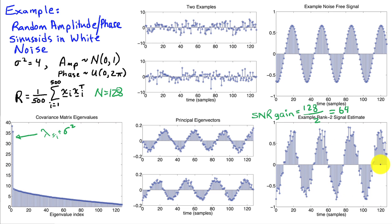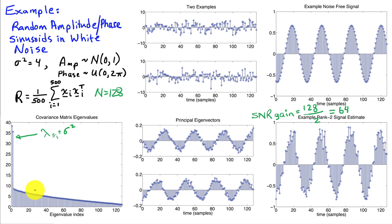One practical challenge with PCA is that in many problems there is not such a clear separation between eigenvalues associated with the signal and those associated with noise, and the noise often isn't exactly white. Choosing the appropriate value of p is therefore more difficult, requiring significant judgment about when the larger eigenvalues cease to be significant and fall into the noise floor — one of the key practical challenges when applying PCA to more complex data.